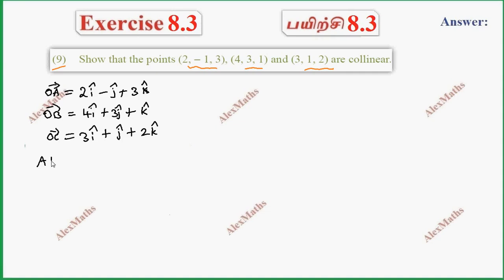Now, AB vector is OB vector minus OA vector, which equals 2i plus 4j minus 2k. Then BC vector is OC vector minus OB vector, which equals minus i minus 2j plus k.